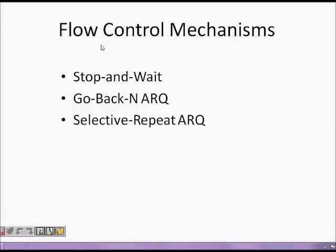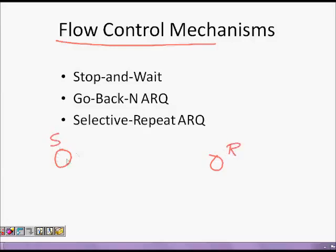In this lecture we are going to learn about flow control mechanisms in the internet. What is flow control? If the sender is sending data at a very high rate such that the receiver cannot handle it, then there must be some mechanism by which the receiver can say: please wait, I must assimilate and process the data you have given me first.